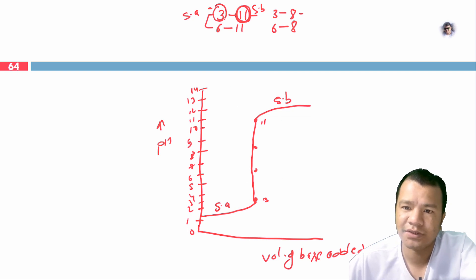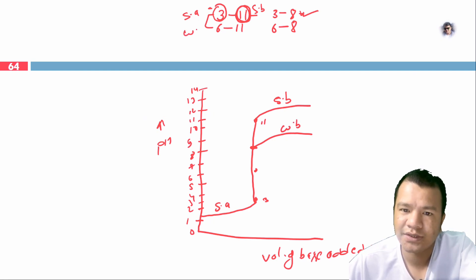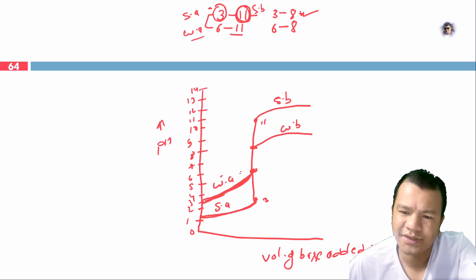For strong acid versus weak base, the steep rise is approximately pH 3 to 8. For weak acid versus weak base, the steep rise is only pH 6 to 8. We need to select indicators whose pH range falls within the steep rise of each respective titration curve.